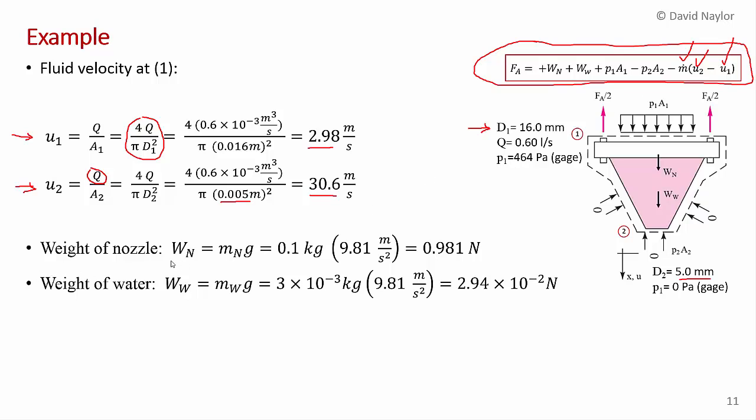Next, we calculate the weight of the nozzle, which is just mg. We're told in the problem statement that the nozzle weighs 0.1 kilograms. So times 9.81 meters per second squared. And a kilogram meter per second squared is a newton. So we have the weight of the nozzle.